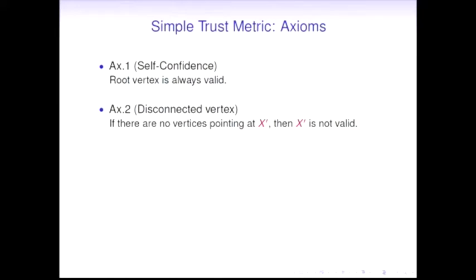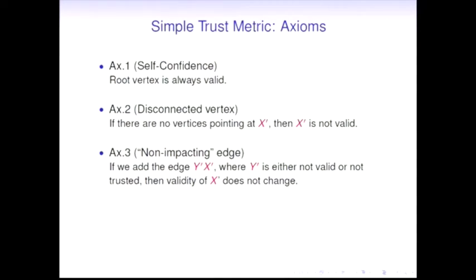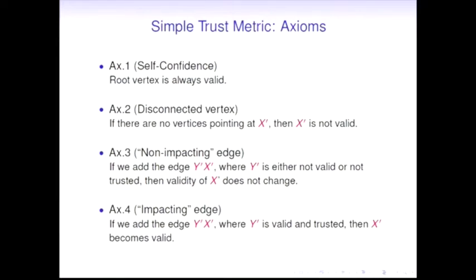We create a set of axioms - we're not creating them, but disintegrating that definition into simple rules which are quite obvious. First, the root vertex is always valid, so A is always valid for herself. Second, if there is nobody in the certification graph who signs X, then X should not be valid, which is also sensible. Then, if some Y signs X but Y is either not valid or not trusted, then the validity of X shouldn't change. This is the most powerful axiom about in which circumstances the validity should actually change: if we add an edge from Y which is both valid and trusted, then X becomes valid. These four axioms uniquely define that simple trust metric.